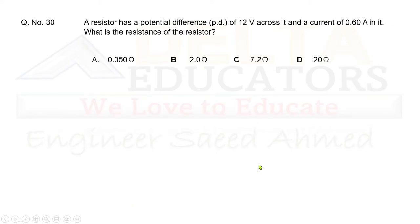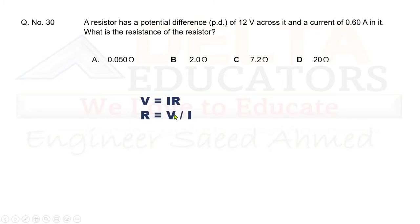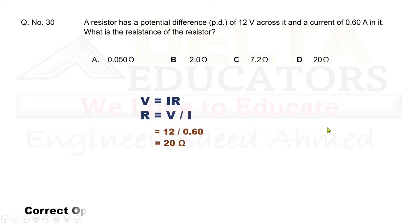Question 30: A resistor has a potential difference of 12 V across it and a current of 0.6 A. What is its resistance? Using Ohm's law: R = V ÷ I = 12 ÷ 0.6 = 20 Ω. 20 Ω is given in option D. Correct option is D.